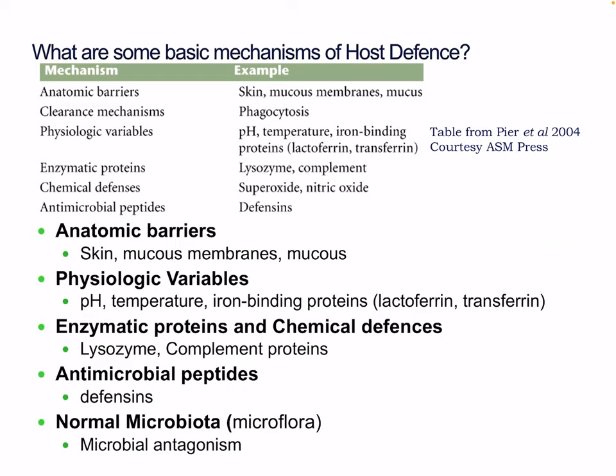We also have physiological variables such as pH — for example, the really low pH of the stomach — and temperature, such as fever. We have iron-binding proteins like lactoferrin and transferrin, which can destroy certain bacterial components. Enzymatic and chemical defenses include lysozymes, complement proteins, and antimicrobial peptides like defensins. We also have our normal microbiota, or microflora, which can cause microbial antagonism.